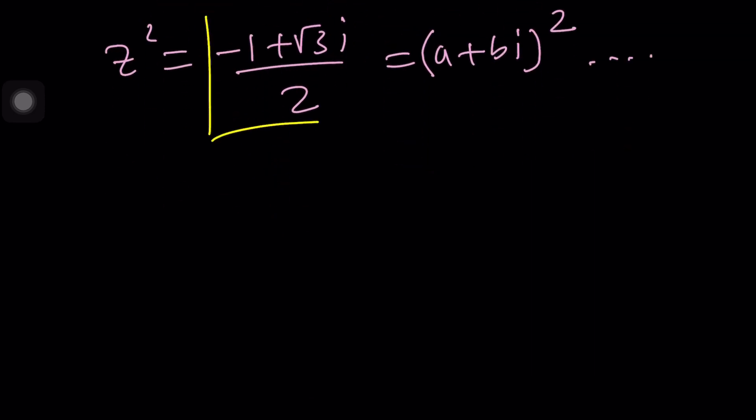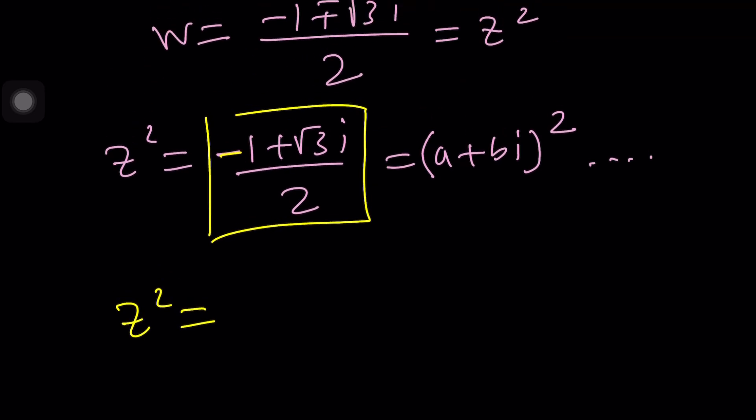That's why we're going to use a special method to take the square root of this number. We're going to write this in polar form. So what is this in polar form? Think about it. First of all, it's modulus is one because of the negative one half and root three over two.